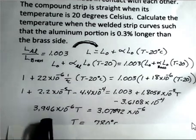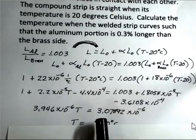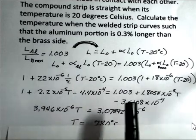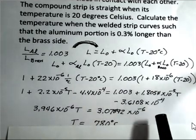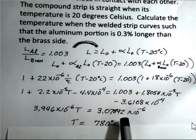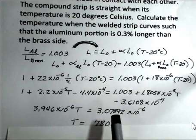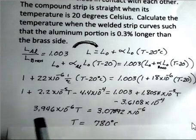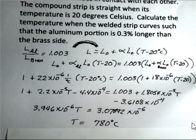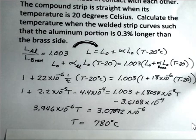So 3.946 times 10 to the minus 6 T. And then the numbers on the right side, I started with 1.003. I subtracted 1 from both sides. And then I subtract the 3.6108 times 10 to the minus 4. And hopefully I've done that correctly to end up with 3.07892 times 10 to the minus 6. In working problems, I tend not to round in intermediate calculations. I'll round at the final answer. And we're ready to calculate that final answer. Divide through by the coefficient that's on T. And again, you should check my work here. I've got 780 degrees Celsius.